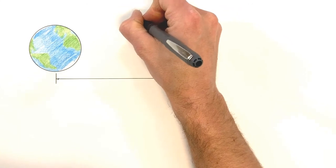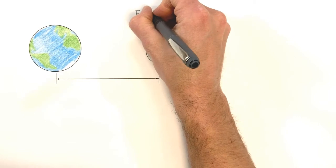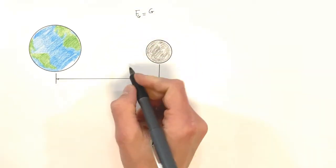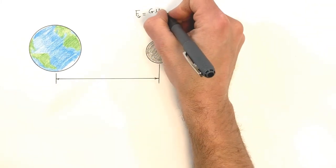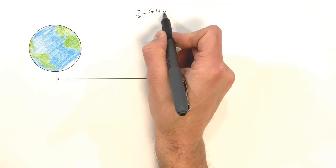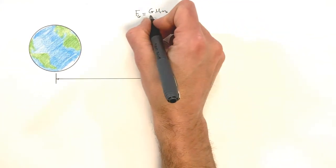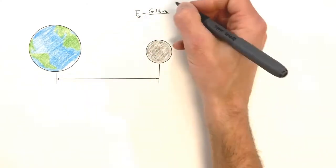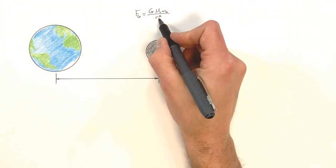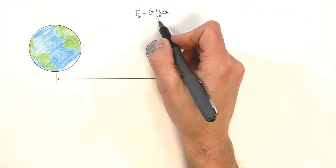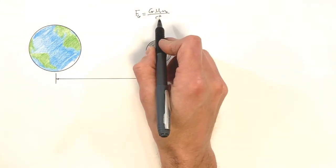Newton's law of universal gravitation is given by the equation: force by gravity equals big G — the gravitational constant — times the product of the two masses in question. I'm going to say big M and little m; sometimes you'll see these written as m₁ and m₂. This is divided by radius squared. Now, this word 'radius' is a little bit misleading and we'll talk about that in a minute. But this right here is Newton's law of universal gravitation.